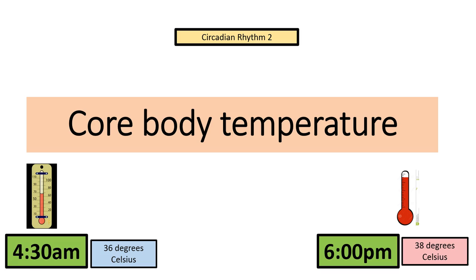The second circadian rhythm we're going to look at — and you only need to remember two — is the core body temperature rhythm. Studies have found that our temperature is lowest at 4:30 a.m. in the morning at around 36 degrees Celsius, and highest at around 6 o'clock in the evening at around 38 degrees Celsius. So our bodies usually follow this daily rhythm. You can try this out by getting a thermometer and checking your body temperature at these particular times of the day.